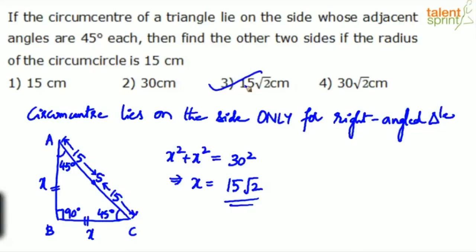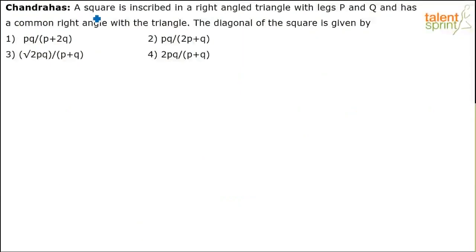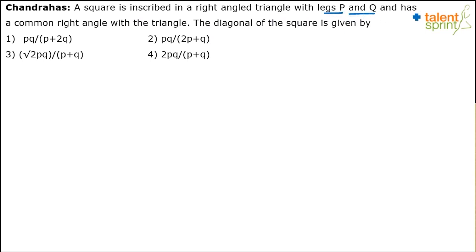Option 3 is the answer for that question. Now: a square is inscribed in a right angle triangle with legs p and q and has a common right angle with the triangle. The diagonal of the square is given by — so we have to find out how to measure the diagonal of the square inscribed in the right angle triangle with legs p and q.